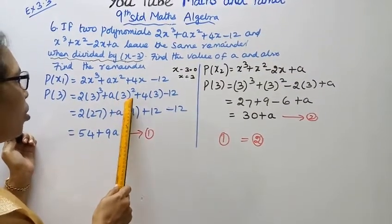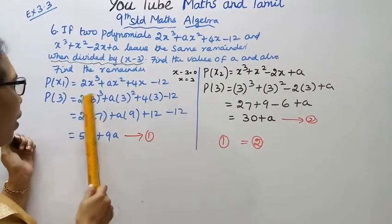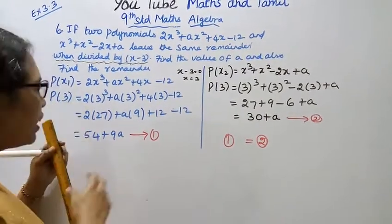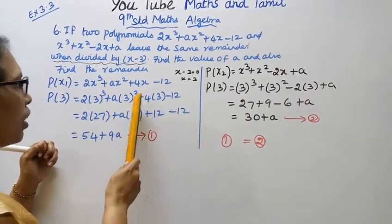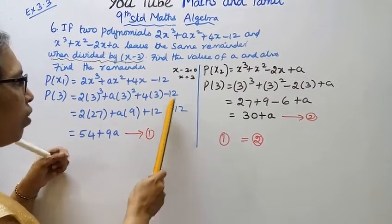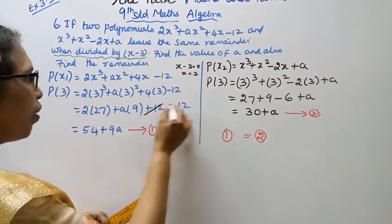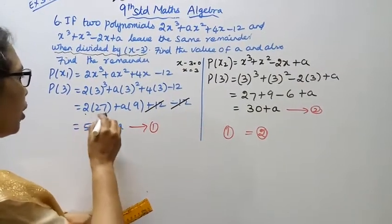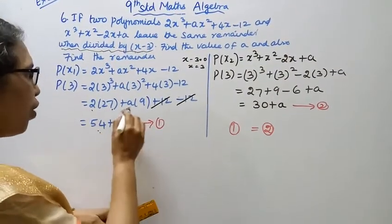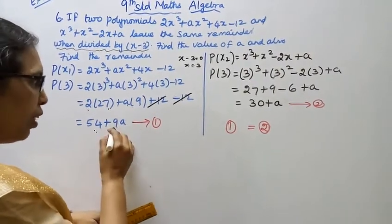For the first polynomial, substituting x = 3: 2 into 3³ plus a into 3² plus 4 into 3 minus 12. That is 2 into 27, which is 54, plus a into 9, which is 9a, plus 12 minus 12. The 12 and minus 12 cancel, giving 54 plus 9a.